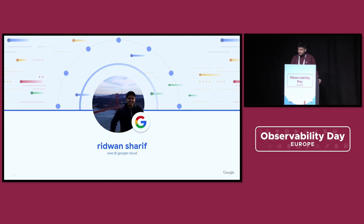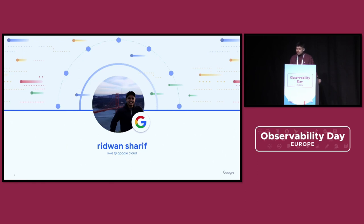Let me start by telling you who I am. I'm Brudwan Sharif. I work on observability tools and solutions for different GCP environments. Most of my work has been focused on agents like OpenTelemetry and Prometheus and our own agent called the Ops Agent, getting them to run on VMs. But more recently, I've been working on leveraging OpenTelemetry and Prometheus on serverless environments like Cloud Run.